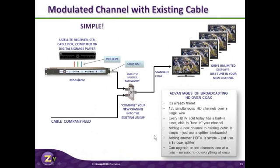Just a great example of how easy it is to integrate a ZV modulated signal with existing cable coax. So let's quickly look at some of these advantages. What's the advantage of broadcasting HD over coax? Well, obviously, it's already there in many instances — 135 simultaneous HD channels over a single wire. All TVs sold today have built-in QAM tuners. TVs sold before about six years ago, just be careful — they might not have a QAM tuner, but any TV that's six years old or newer will have one.